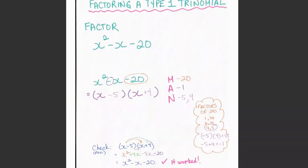Later on, we'll look at some Type 2 trinomials where this number here is not 1, it's something else other than 1.